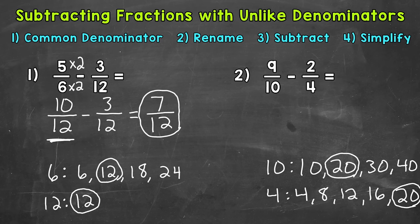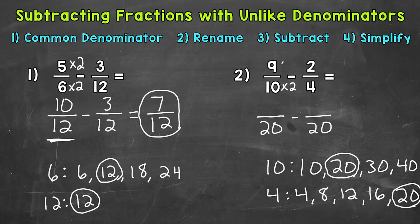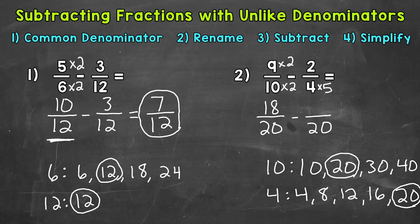Let's go back up to the original problem and rename with that common denominator of 20. We'll start with 9 tenths. 10 times 2 is 20, and whatever we do to the denominator, we have to do to the numerator. So 9 times 2 gives us 18 — 18 twentieths is equivalent to 9 tenths. Now for 2 fourths: 4 times 5 equals 20, so we do the same to the numerator — 2 times 5 gives us 10.